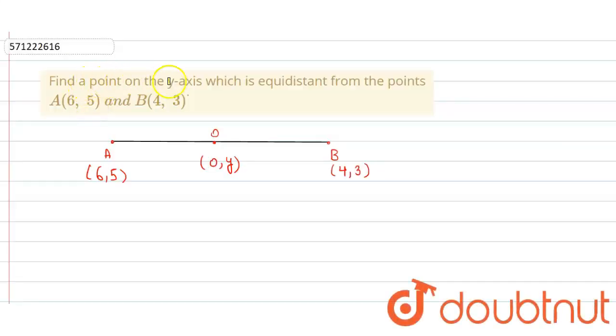In the given question, we have to find a point on the y-axis which is equidistant from the points A and B.